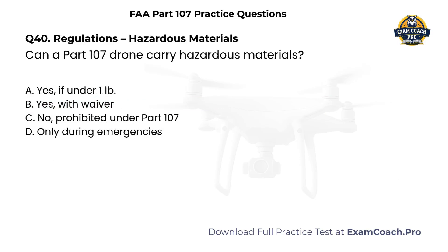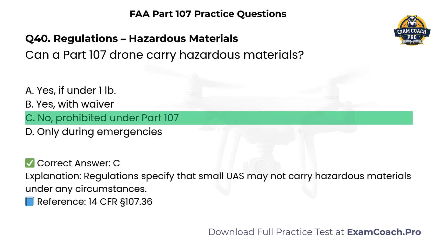Regulations — Hazardous Materials. Can a Part 107 drone carry hazardous materials? A. Yes, if under one pound. B. Yes, with waiver. C. No, prohibited under Part 107. D. Only during emergencies. Correct answer: C. No, prohibited under Part 107. Regulations specify that small UAS may not carry hazardous materials under any circumstances.